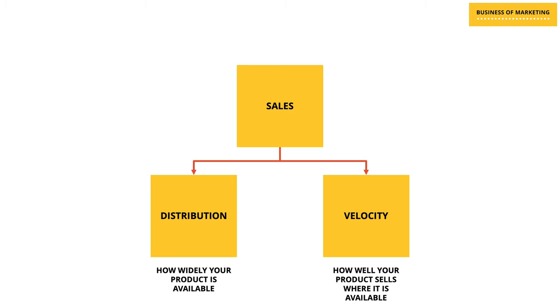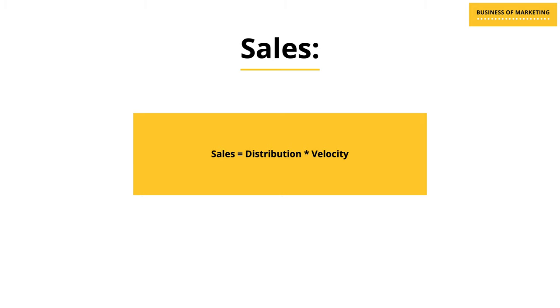There are primarily two components to sales. The first is distribution, which is how widely your products are available in the market. And the second is velocity. Velocity is a measure to understand how well your product is selling when it is made available for consumers to buy. When you look at it as a mathematical equation, sales is equal to distribution multiplied by velocity.